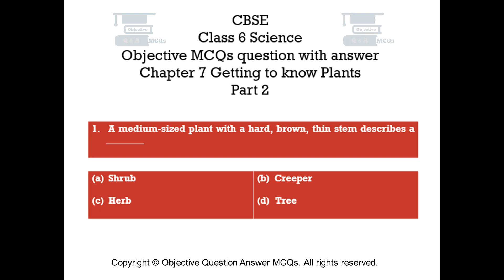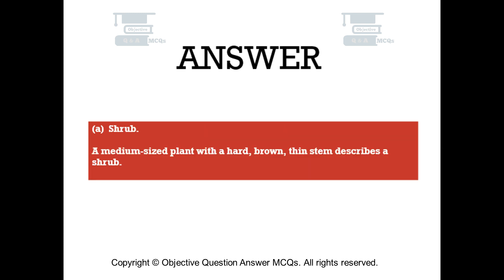Question number one. A medium sized plant with a hard, brown, thin stem describes: Option A shrub. Option B creeper. Option C herb. Option D tree. The right answer is option A — shrub. A medium sized plant with a hard, brown, thin stem describes a shrub.